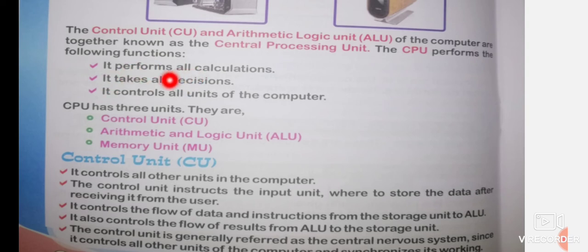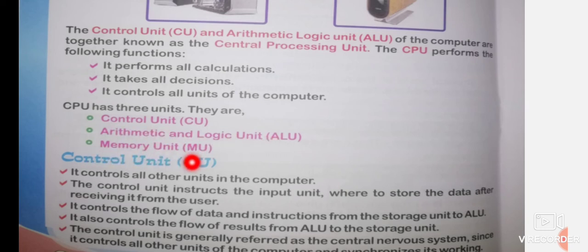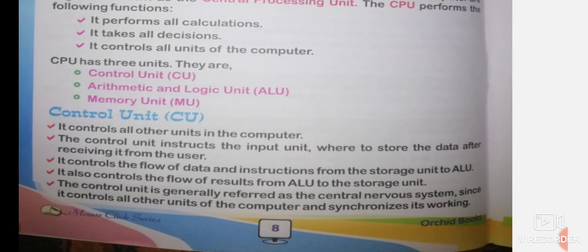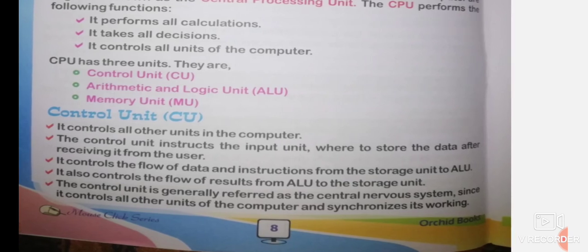CPU has three units: Control Unit (CU), Arithmetic Logic Unit (ALU), and Memory Unit (MU). The Control Unit controls all the functions of the computer. It has all authority and acts as the head, like a head of an institution or office, instructing and controlling all operations and calculations.